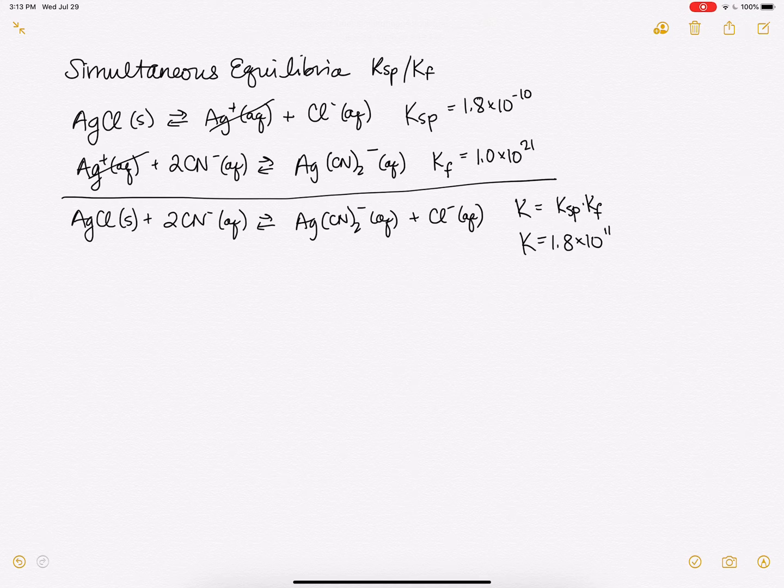So again, looking at how soluble silver chloride is just on its own, not very soluble, 10 to the minus 10th for the K. But if we add some cyanide here, we change that around and make it very soluble, 10 to the 11th is our new K.